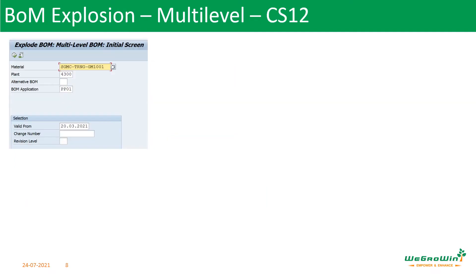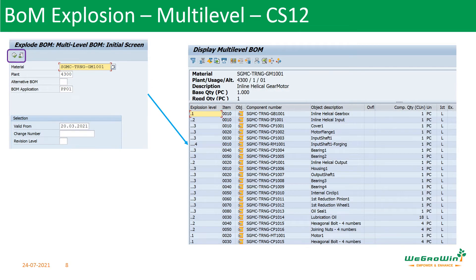In SAP, we use transaction CS12 to see multi-level BOM. We enter the material code, plant, and BOM application, then execute. We can see the bill of materials from level 0, then level 1, 2, 3, completing all levels for one branch before going to the next. Understanding the level numbers — 1, 2, 3 — is key. When you understand the level, reading the bill of materials becomes easy.